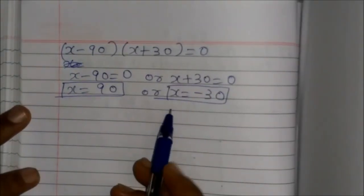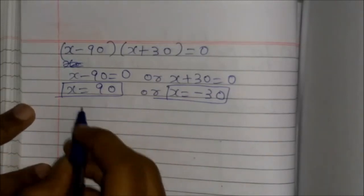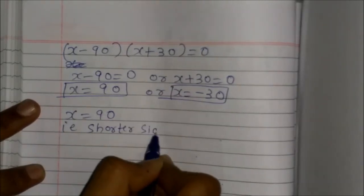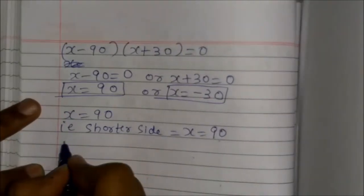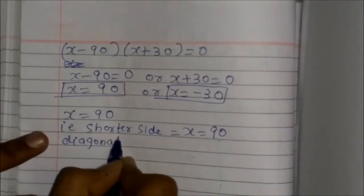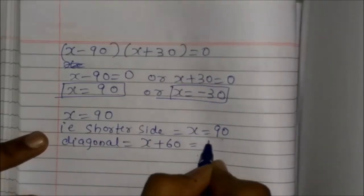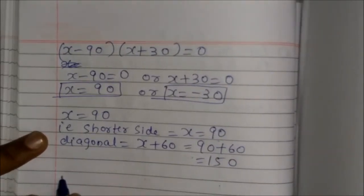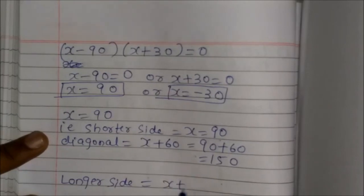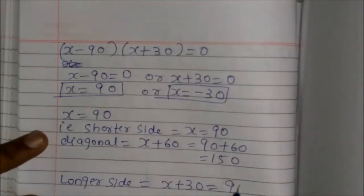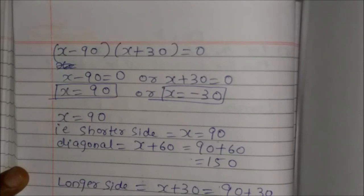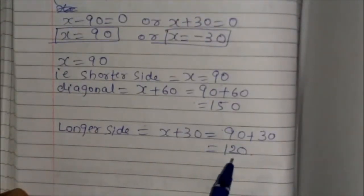Since the side cannot be negative, x equals 90. Therefore, the shorter side is 90 meters, the diagonal is x plus 60 which equals 90 plus 60 equals 150 meters, and the longer side is x plus 30 which equals 90 plus 30 equals 120 meters.